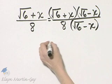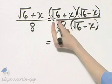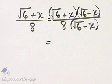And now let's see what we have. In the numerator, think of this as a binomial times a binomial. So you can multiply using the FOIL order.